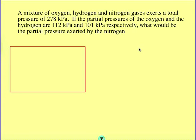Okay guys, I'm going to go over one of each type of the gas calculations you'll see on the test. The first problem reads, a mixture of oxygen, hydrogen, and nitrogen gases exerts a total pressure of 278 kPa.